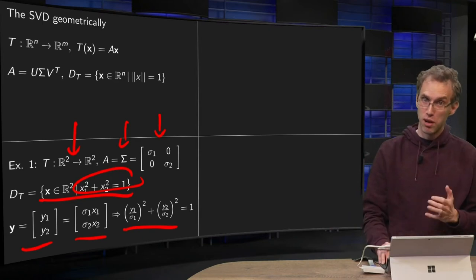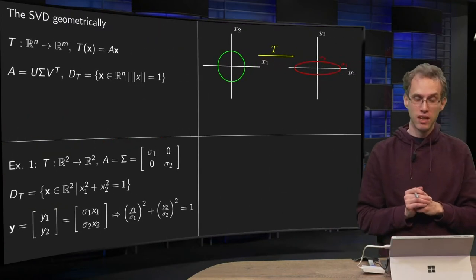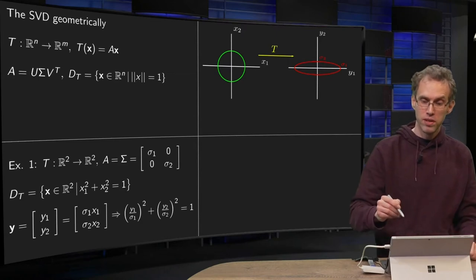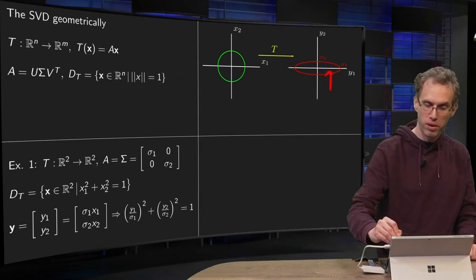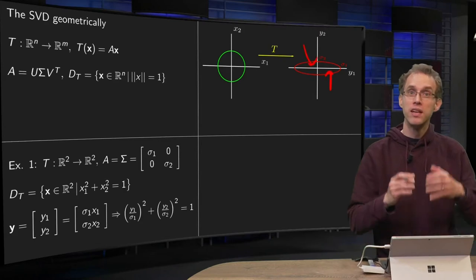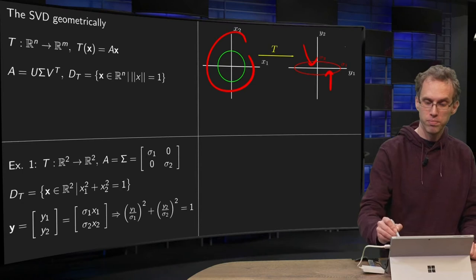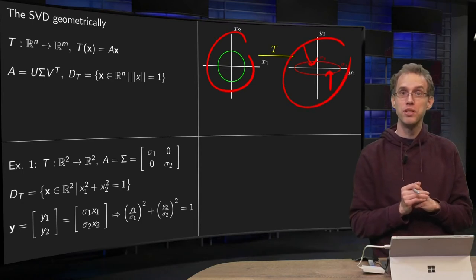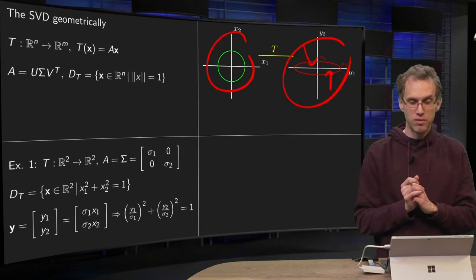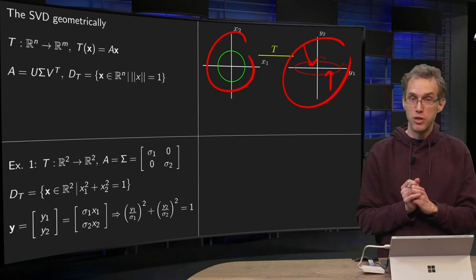So we will get (y_1/sigma_1)^2 + (y_2/sigma_2)^2 = 1, and you recognize this, hopefully, because it is the equation of an ellipse with semi-major axis sigma_1 and sigma_2. So the mapping T in this case maps the unit circle to an ellipse. So that is what this sigma matrix is doing.